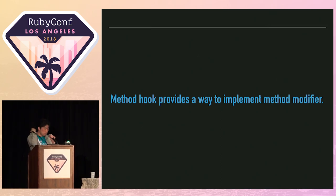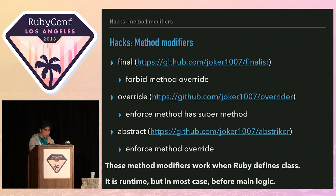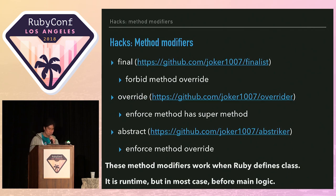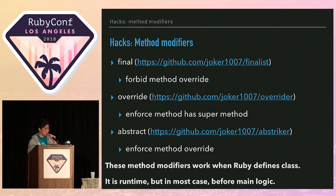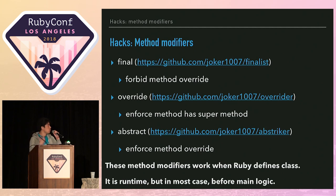Method hooks provide a way to implement method modifiers, like public, private, and protected. By the way, I made three method modifiers. First, a final modifier — final forbids method override. Second, an override modifier — override enforces that the target method has a super method. Third, an abstract modifier — abstract enforces that the target method is overridden. These modifiers are similar to those in Java, so if you know Java you can easily understand them.